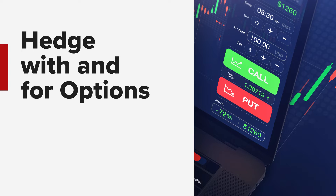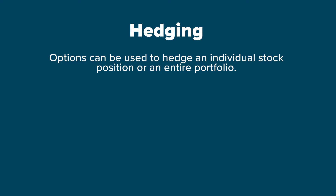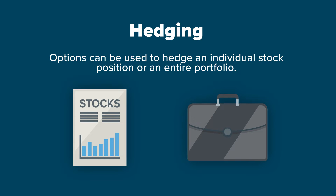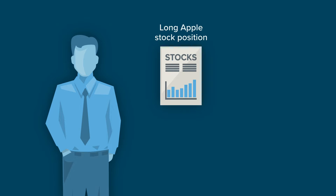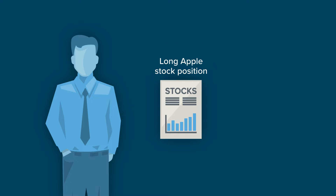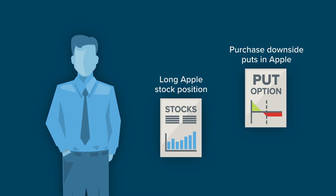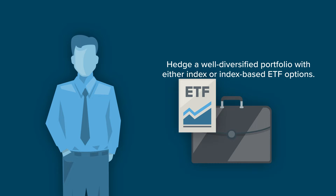Hedging is one of the most popular uses of equity options. Options can be used to hedge an individual stock position or an entire portfolio. For example, an investor may choose to hedge a long Apple stock position against a downward move by purchasing downside puts in Apple, or they may want to hedge a well-diversified portfolio with either index or index-based ETF options.